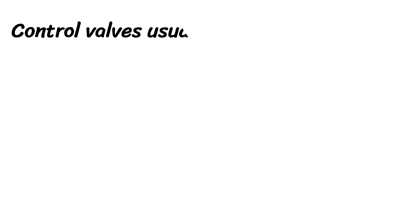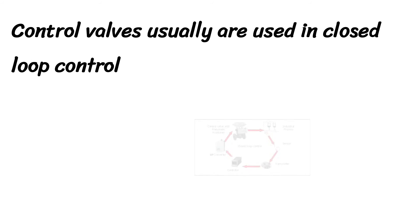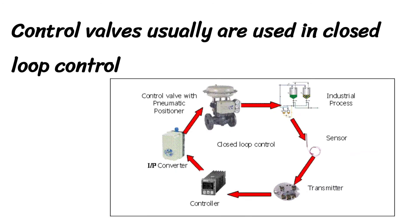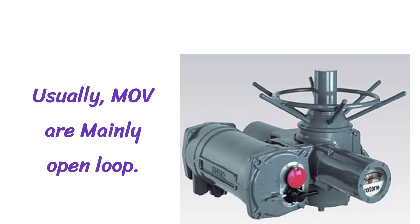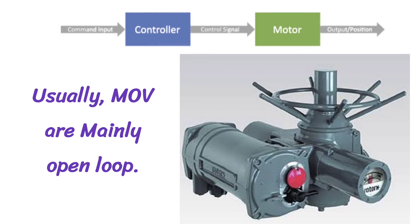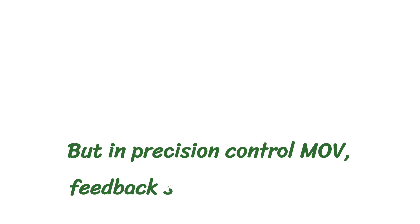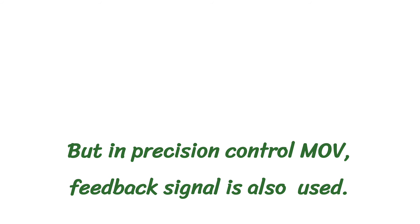Control valves are usually used in closed loop control. In the image you can see the closed loop for control valve operation — this is an important loop, so watch it carefully. Usually MOV are mainly open loop. In open loop, no feedback is used, as shown in the image. But in precision control MOV, a feedback signal is also used.